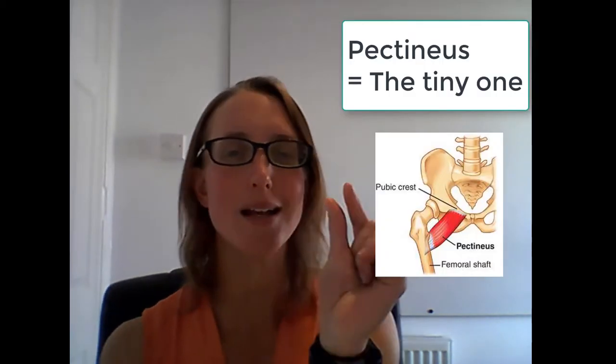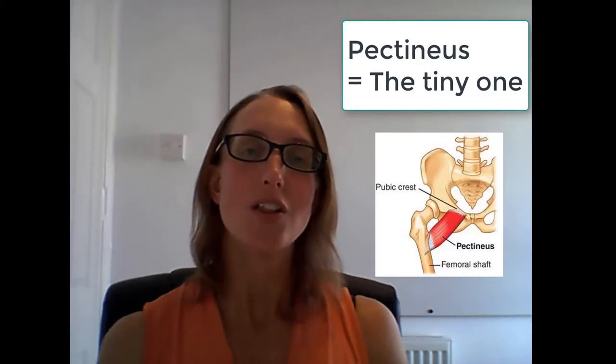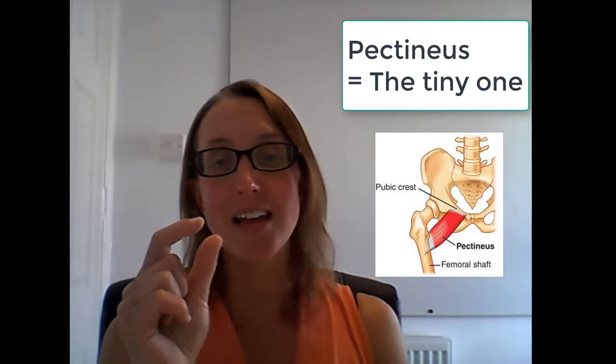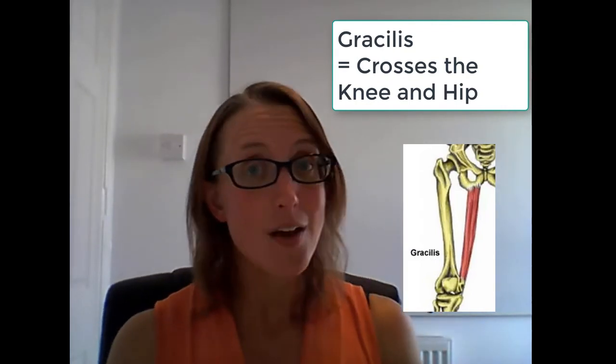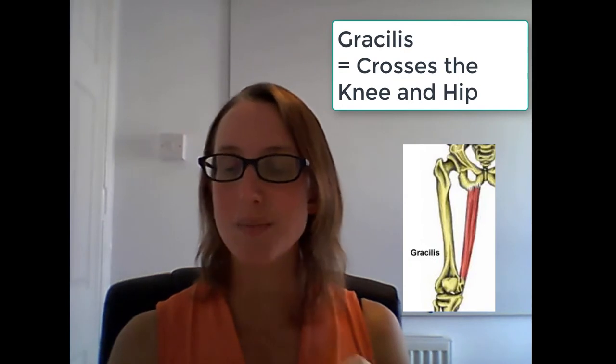Then you have two more. One is the pectineus — a tiny muscle that is responsible for adduction, and it is the fourth of the adductor group. The fifth is the gracilis. This one is a little different because it goes all the way down to the tibia, which is the other side of the knee. It looks a little different to the other muscles in the adductor group — it's long and thin, crosses two joints at both the hip and the knee, and inserts down onto the tibia. So those are the five muscles you need to know as part of the adductor group.